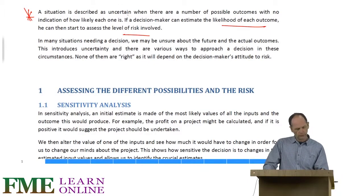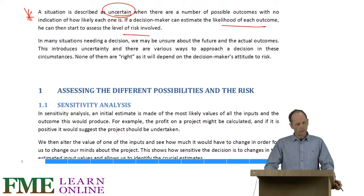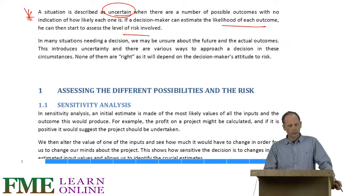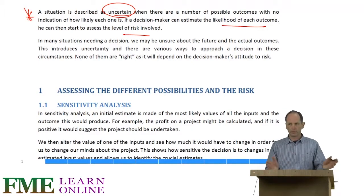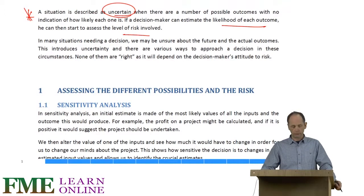Notice that if there is uncertainty, we really have no idea about the level of risk, so we can't start to assess it. Whereas with an idea of what the outcomes might be and how likely they might be, we can start to look at the volatility of the situation, quantify the level of risk in one way or another, and decide what our attitude is to that risk as well.